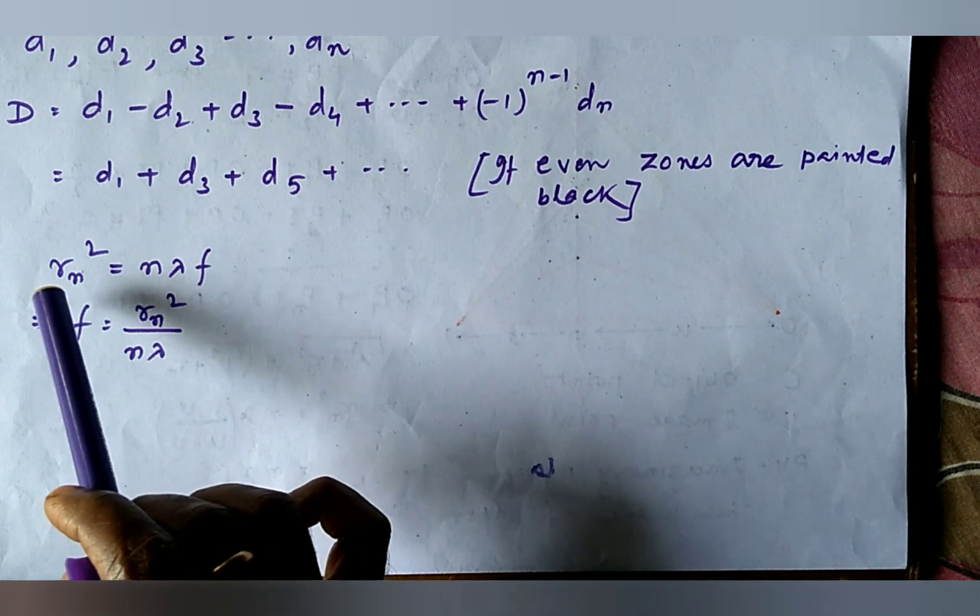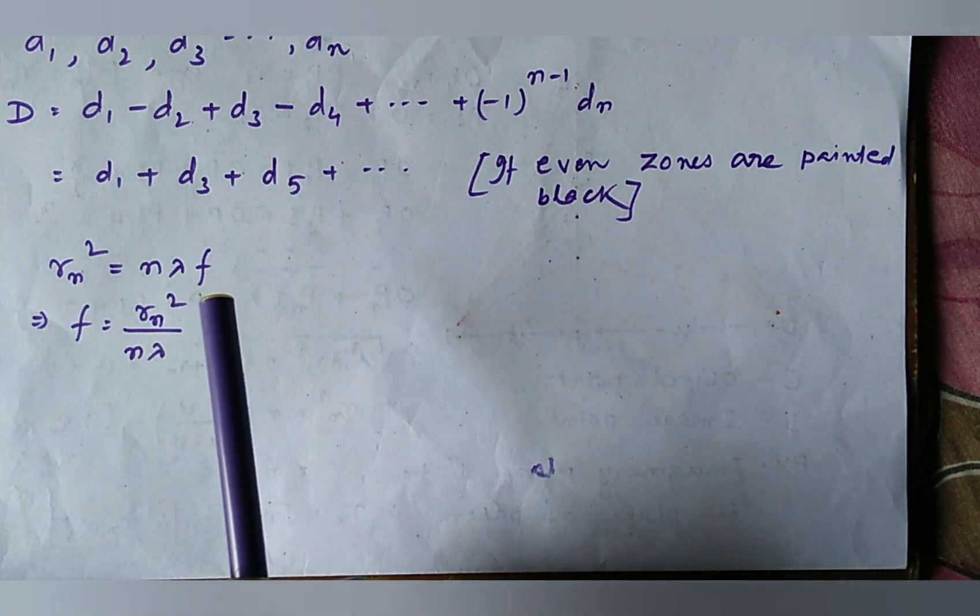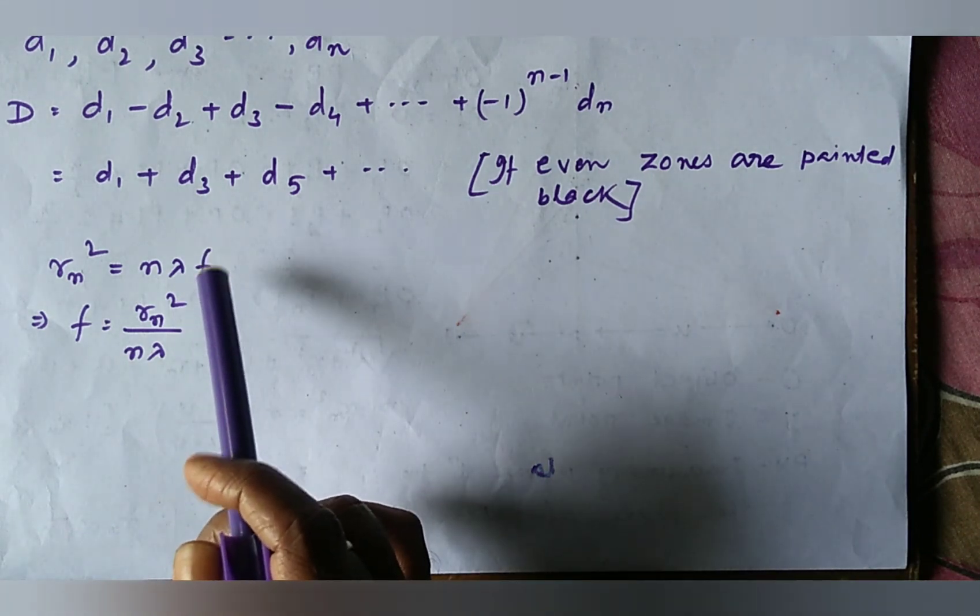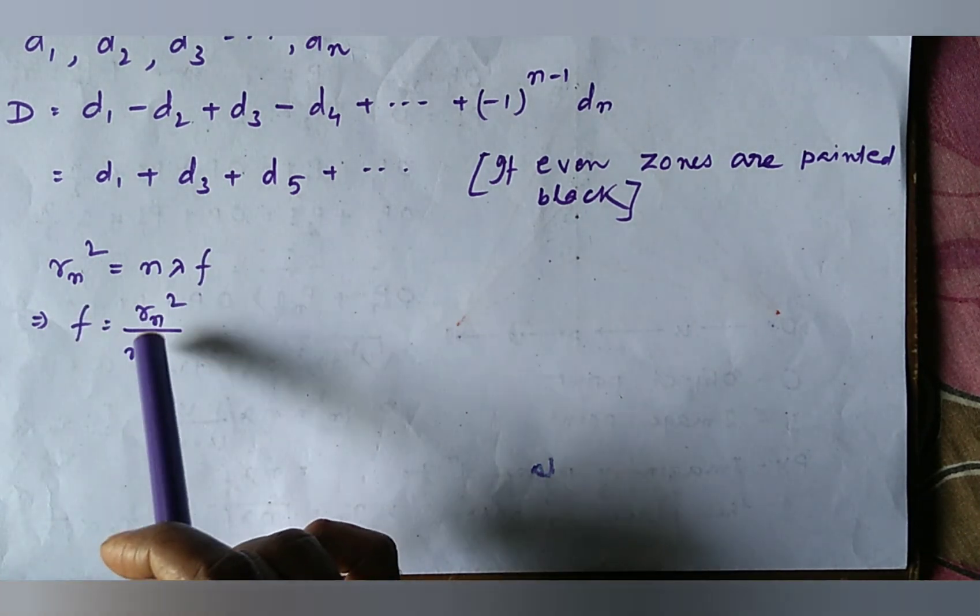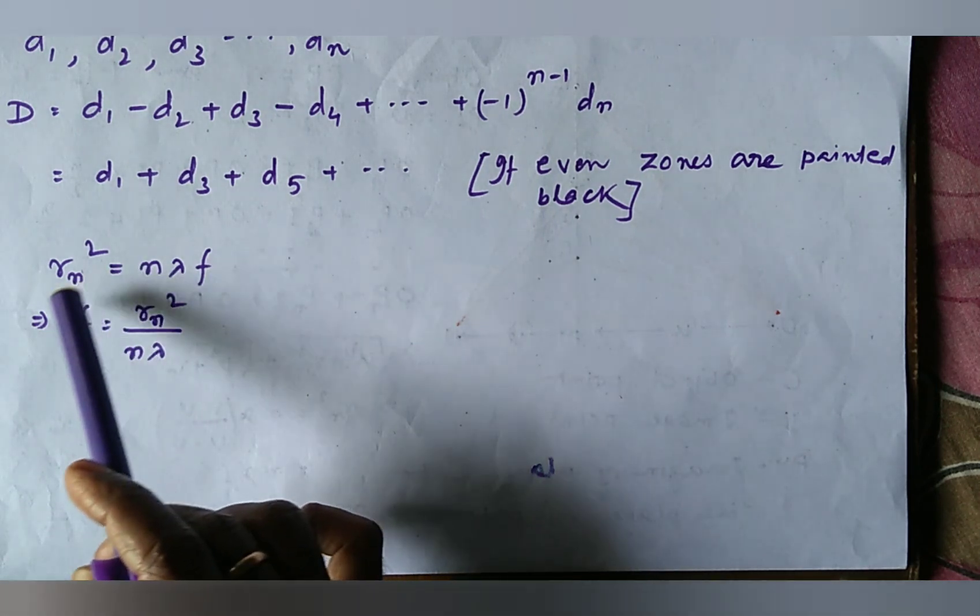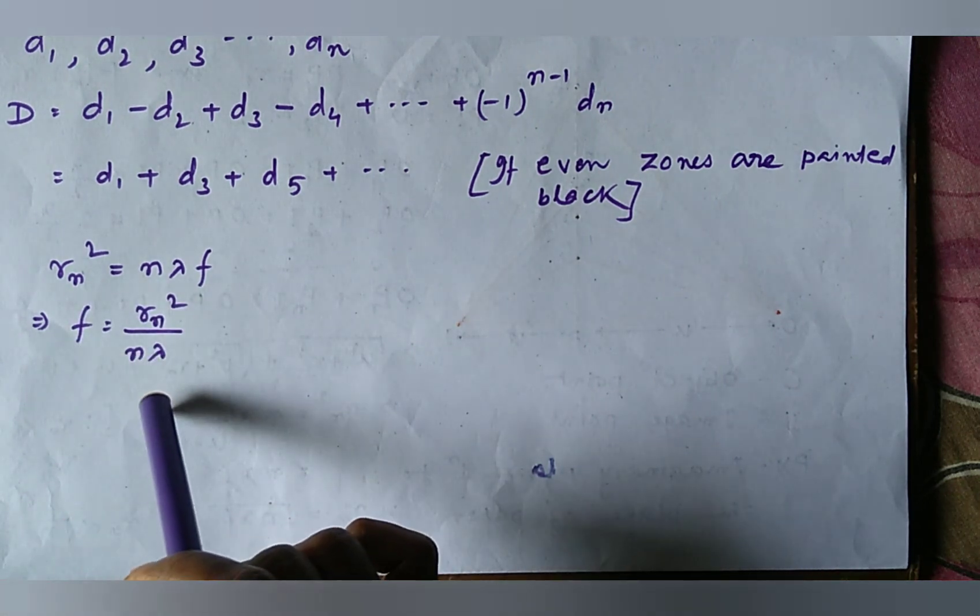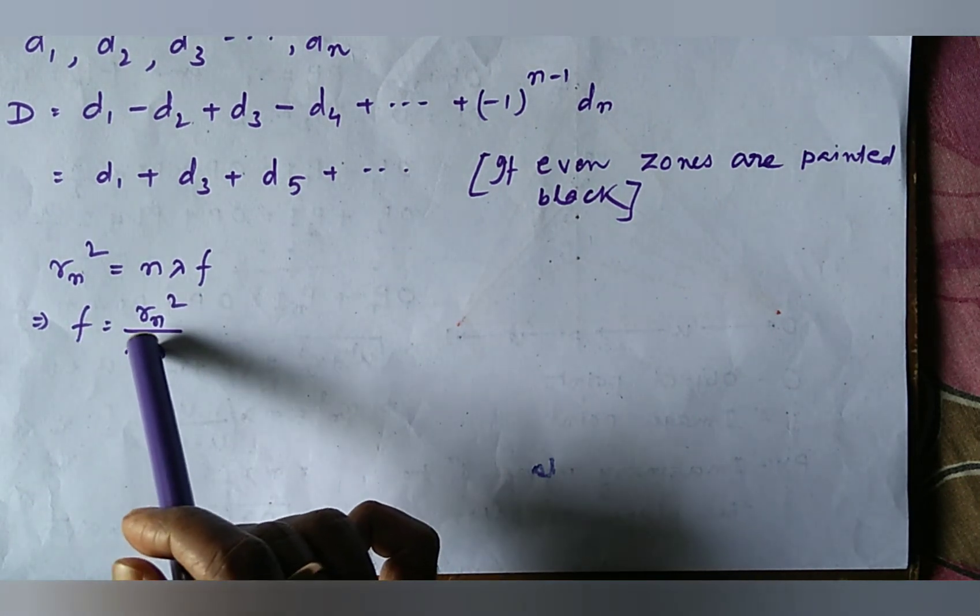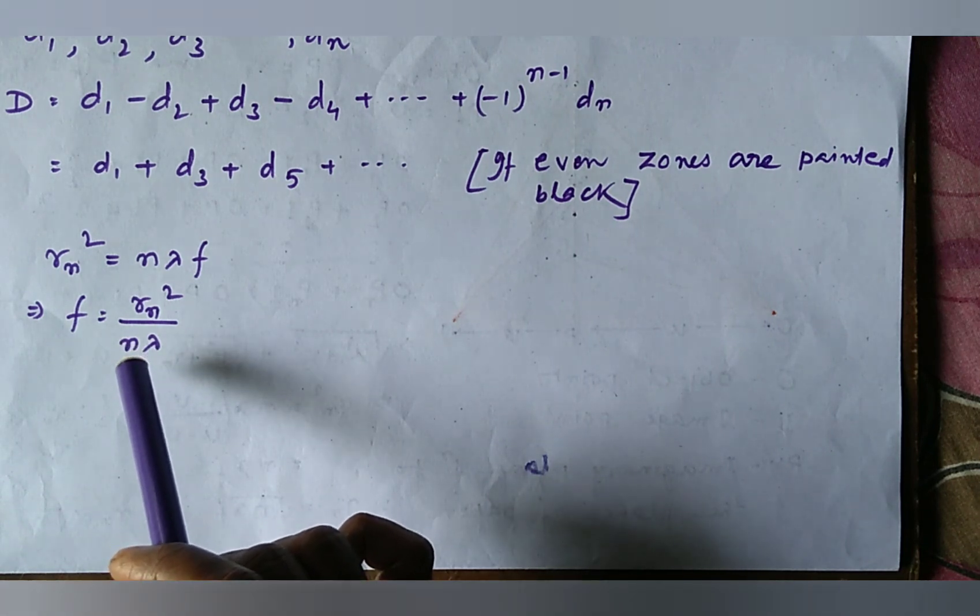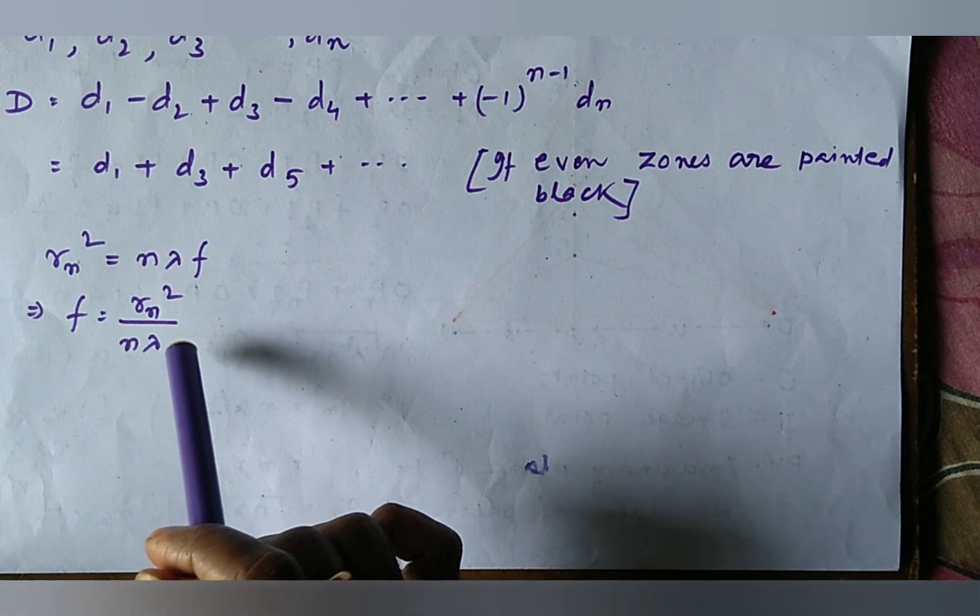Look at the equation Rn square equal to n lambda f. If we treat a zone plate as a converging lens, then we may write f equal to Rn square by n lambda. And look at the form that the focal length of the zone plate depends upon the order number that is n. Hence, we may say that a zone plate has multiple foci.